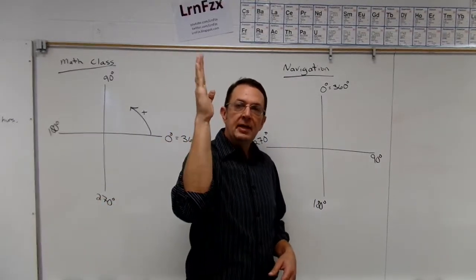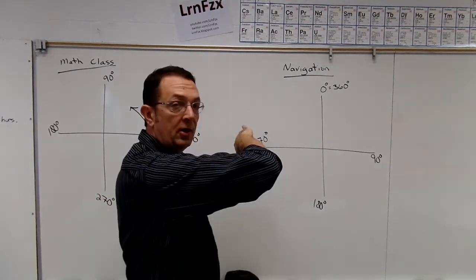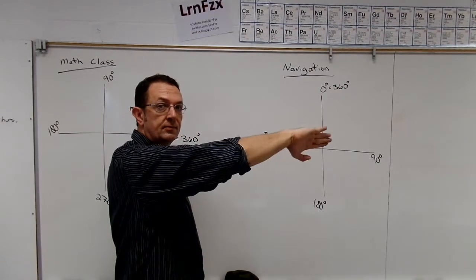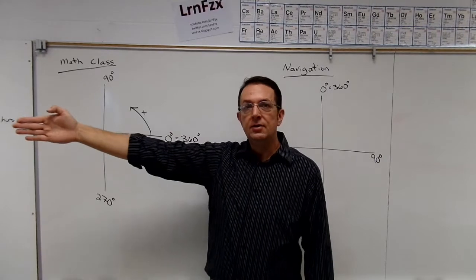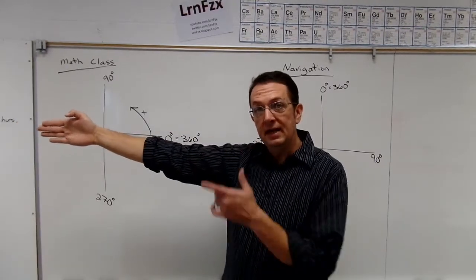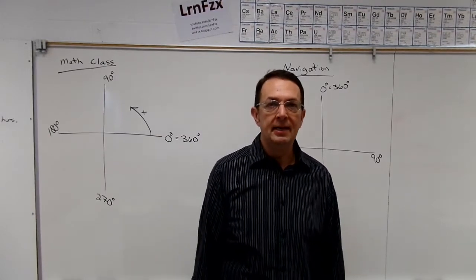So navigation again, zero all the way around to 360, starting at the north. They start out at zero degrees, 90, 180 is straight back toward you, 270 is to the left, that is west, and then 360 is north again, same as zero.